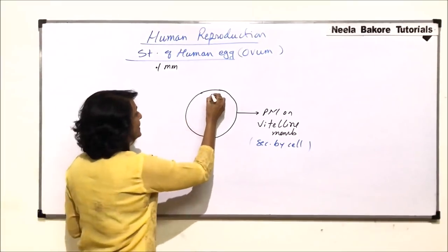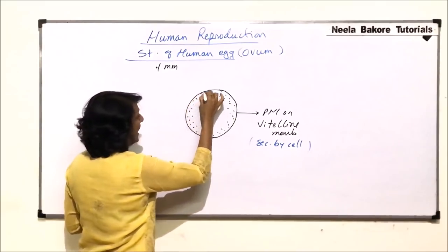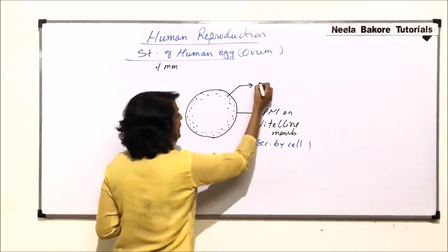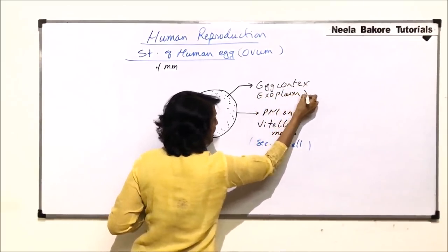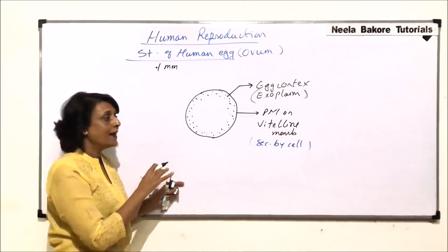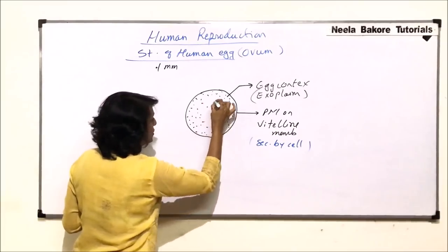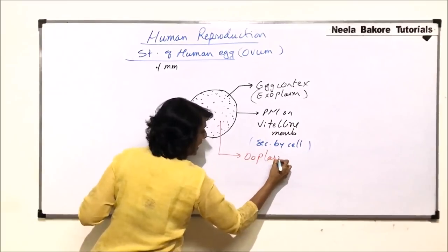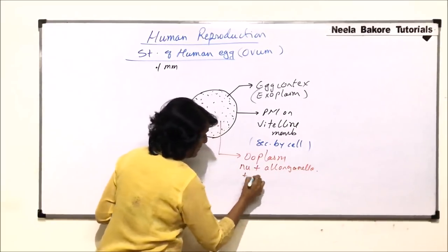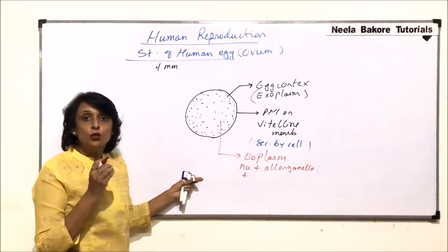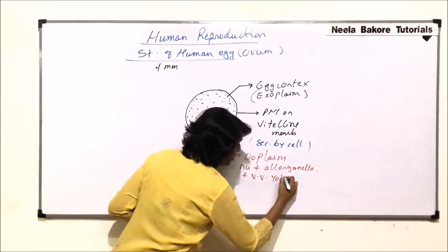The cytoplasmic content is divided into two parts. The outer one, which is less dense, is known as the egg cortex, also called exoplasm. The inner part, where most of the organelles and the nucleus are located, is known as the ooplasm. The ooplasm also contains the nutritive material, that is yolk. In the case of the human egg, the yolk content is very, very less.